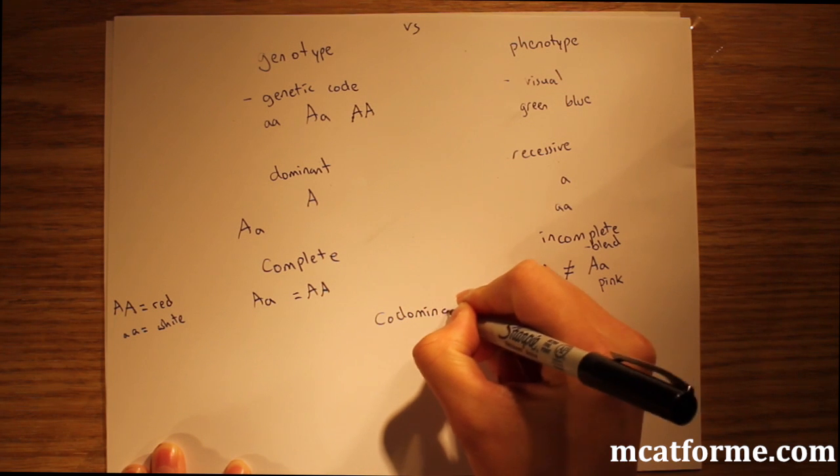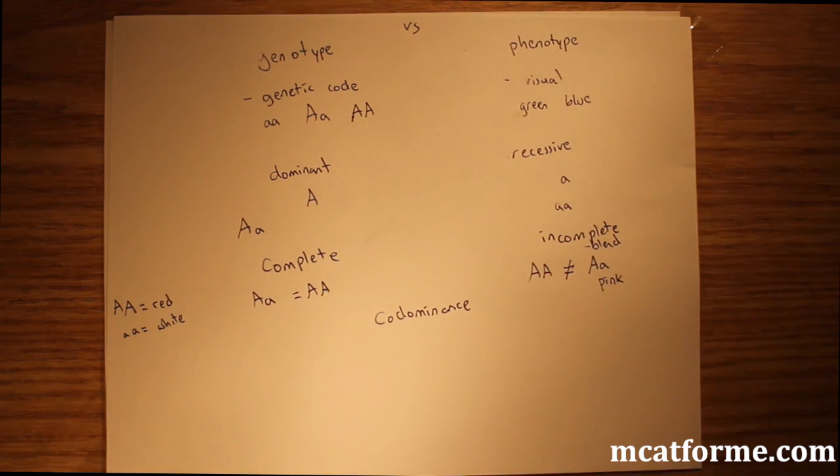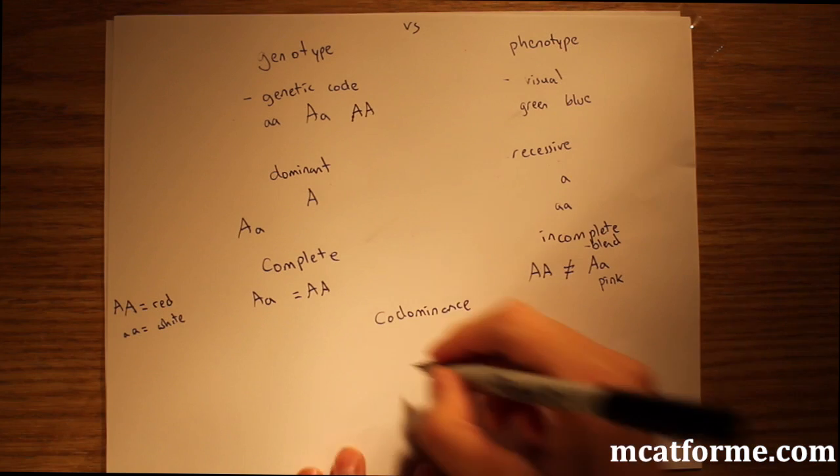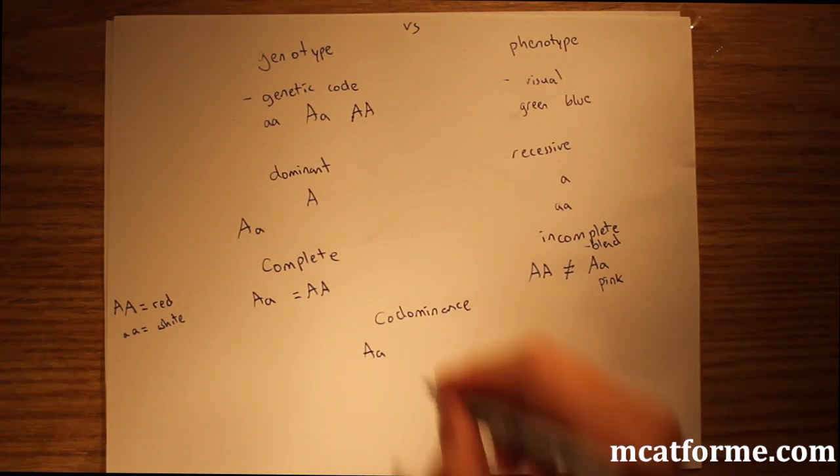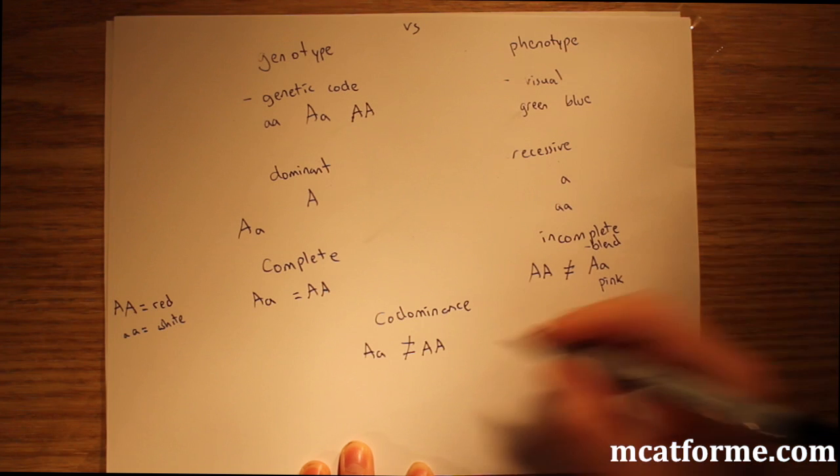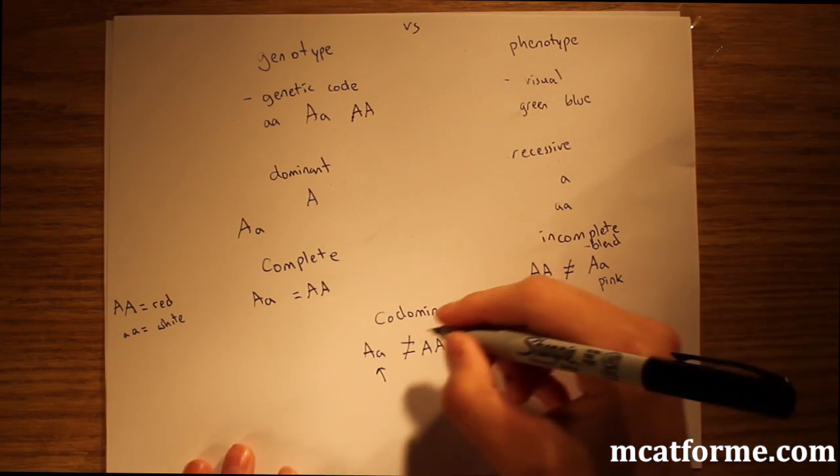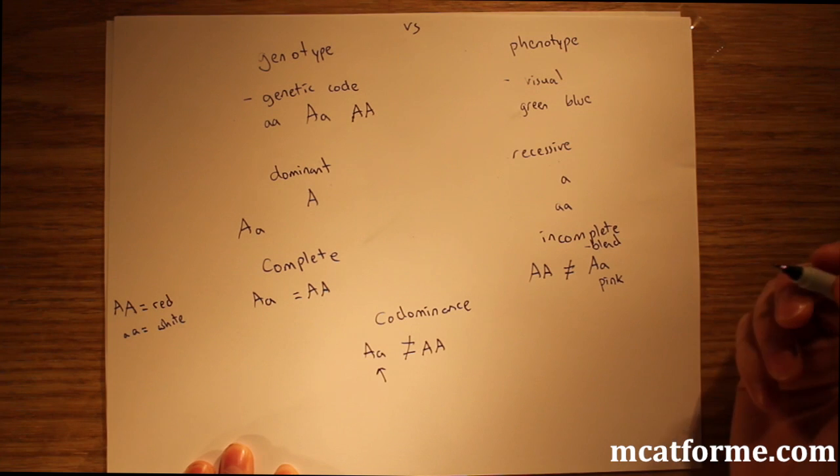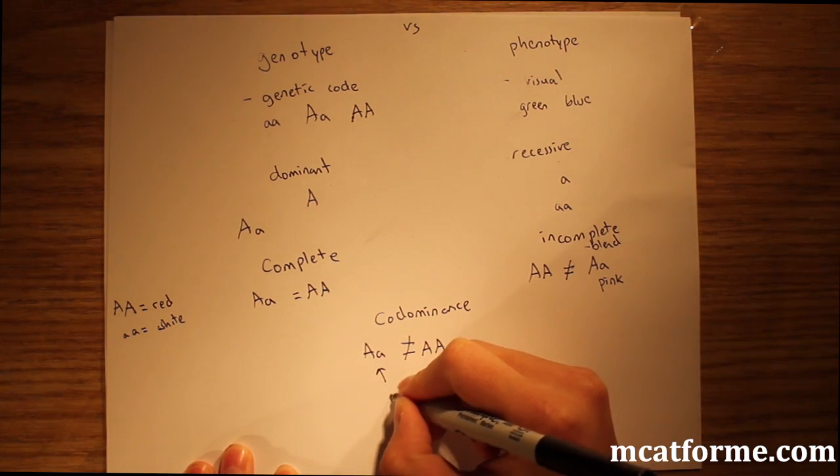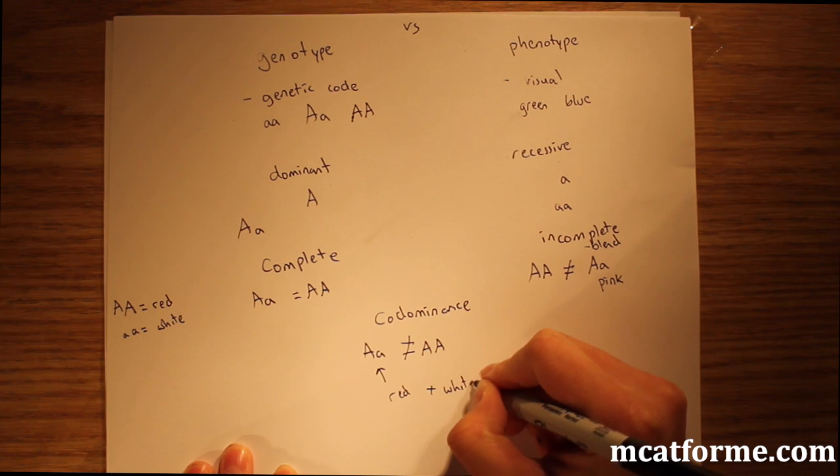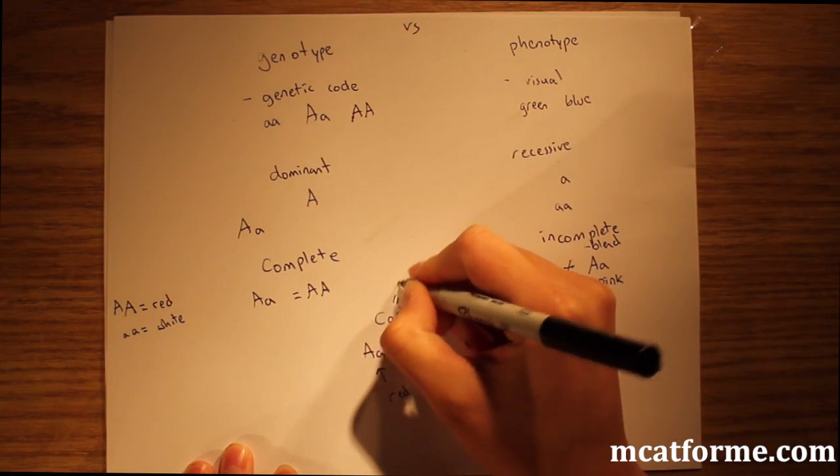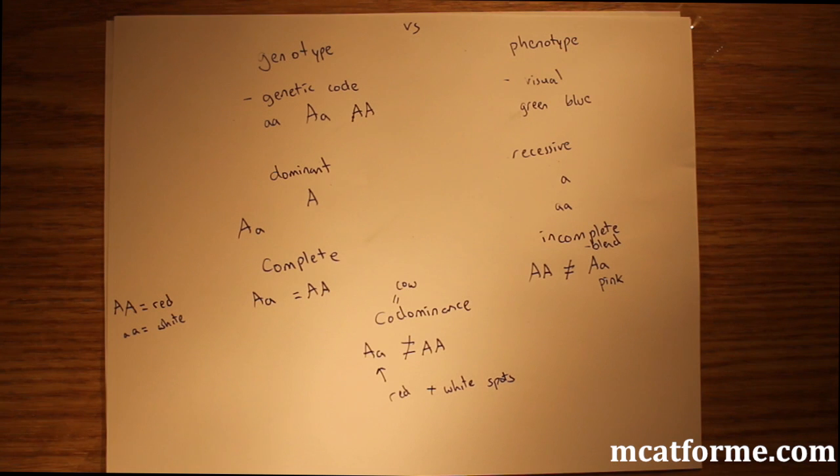Now what is co-dominance? Co-dominance is similar to incomplete dominance but very different. Likewise, big A little a does not equal big A big A, but what does this equal? It's not a blend, rather it's more just a mix or together. Co-dominance, co- meaning together. So you can think of these like polka dots. You'll have red and you'll also have white spots.